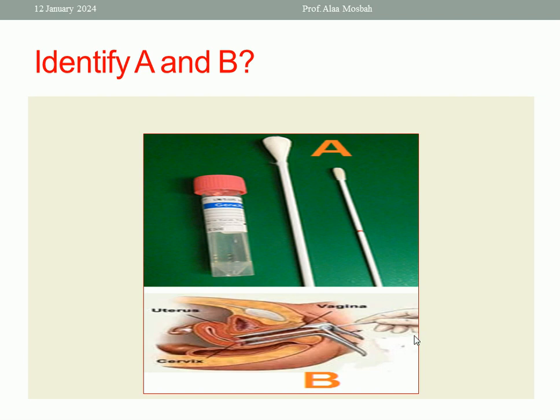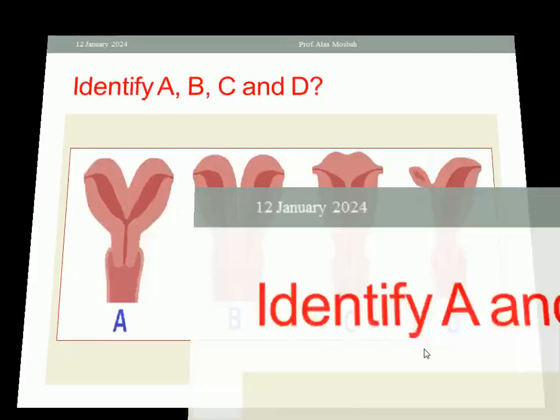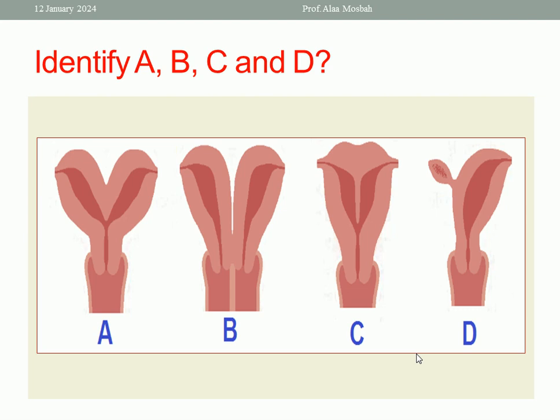Complication may include infertility as I said, so it is important, especially in young ladies, to manage any sexually transmitted disease properly to avoid affection of her fertility in the future. What is the next? Please look to this picture and identify A, B, C and D.